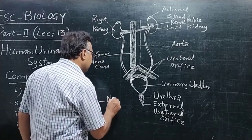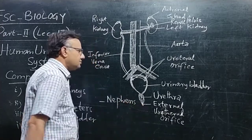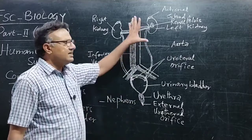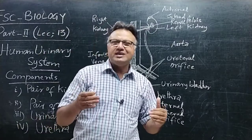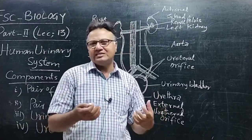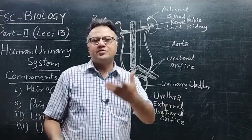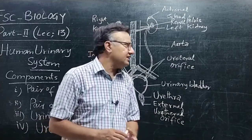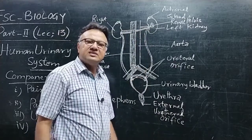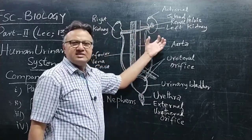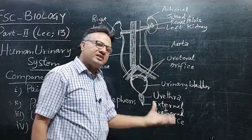Kidneys کے اندر functional units ہوتے ہیں جن کو nephrons کہا جاتا ہے۔ ان کا کام یہ ہے کہ جو blood ہے اس کے اندر سے waste material، salts، یا nitrogenous waste کو filter کر لیا جائے اور پھر urine کی form میں pass out کر دیا جائے۔ Renal artery کے ذریعے blood kidneys کے اندر داخل ہوتا ہے اور nephrons اس blood کی filtration کرتے ہیں۔